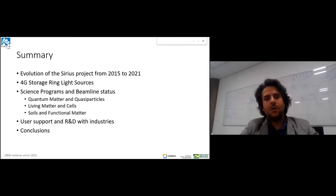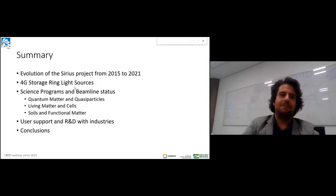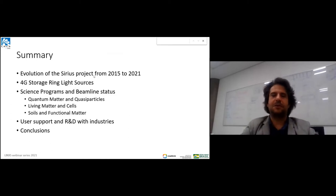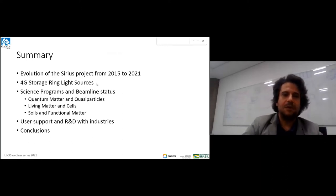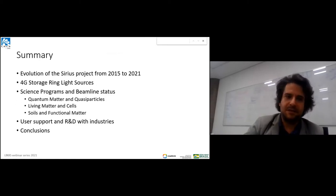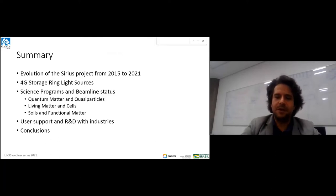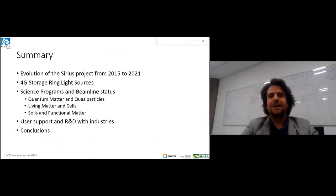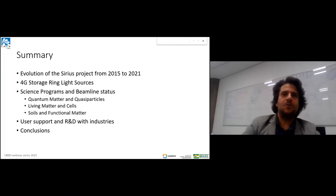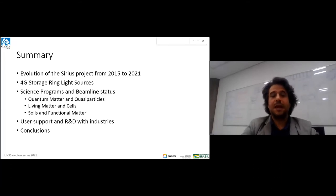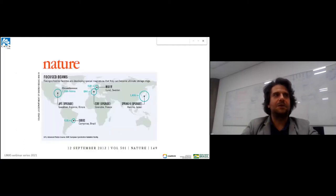My talk is divided into five parts. First, the evolution of our project from 2015 to 2021, then 4G sources and the scientific program, how we provide user support, and R&D developments with industries. What I'm showing is mostly results from other synchrotrons and commissioning results from Sirius. These are very new commissioning results.